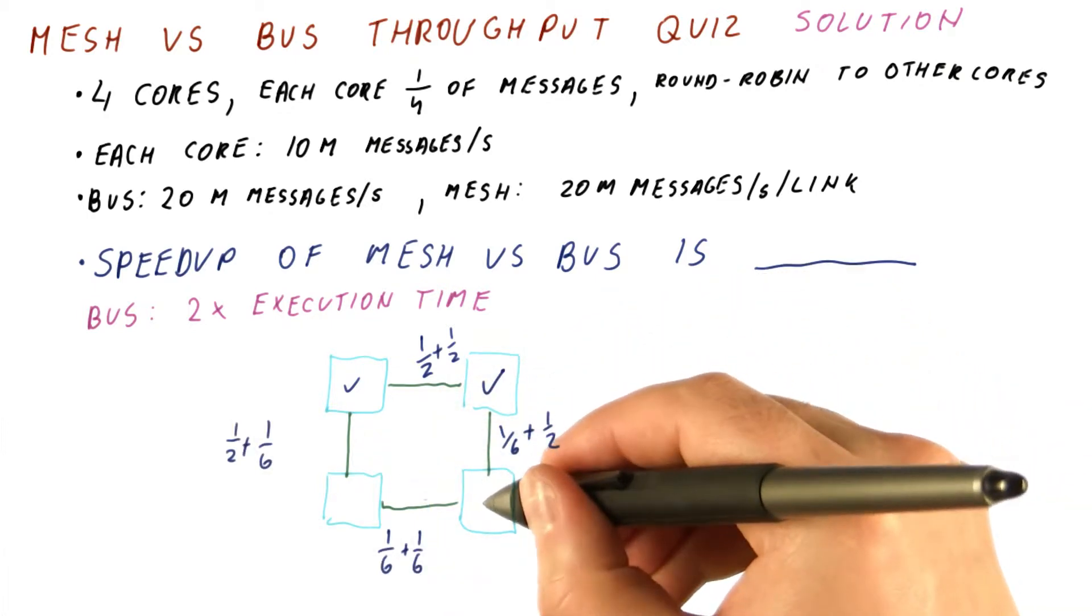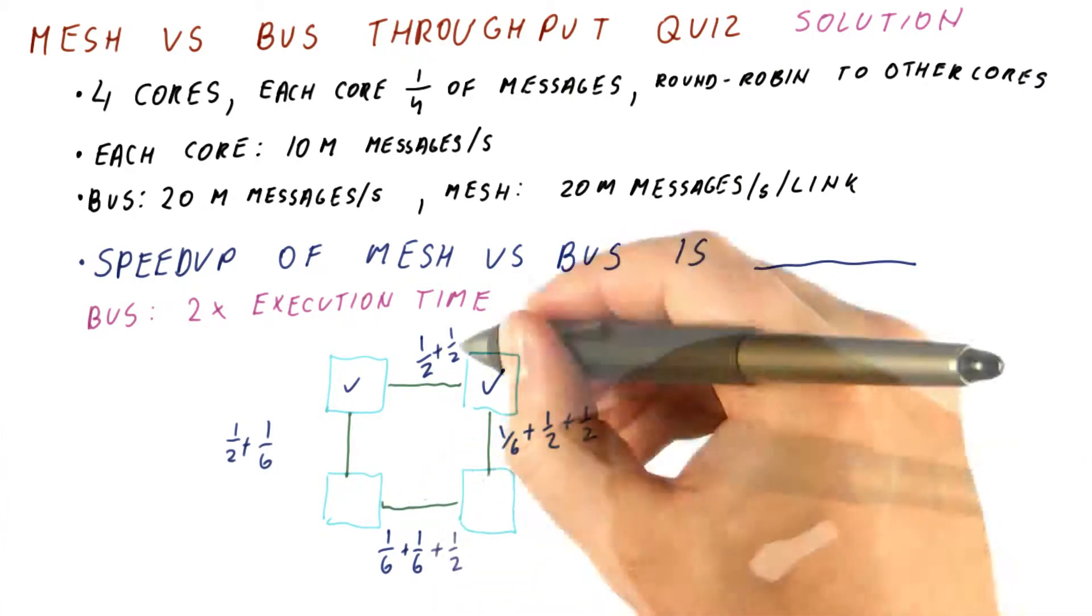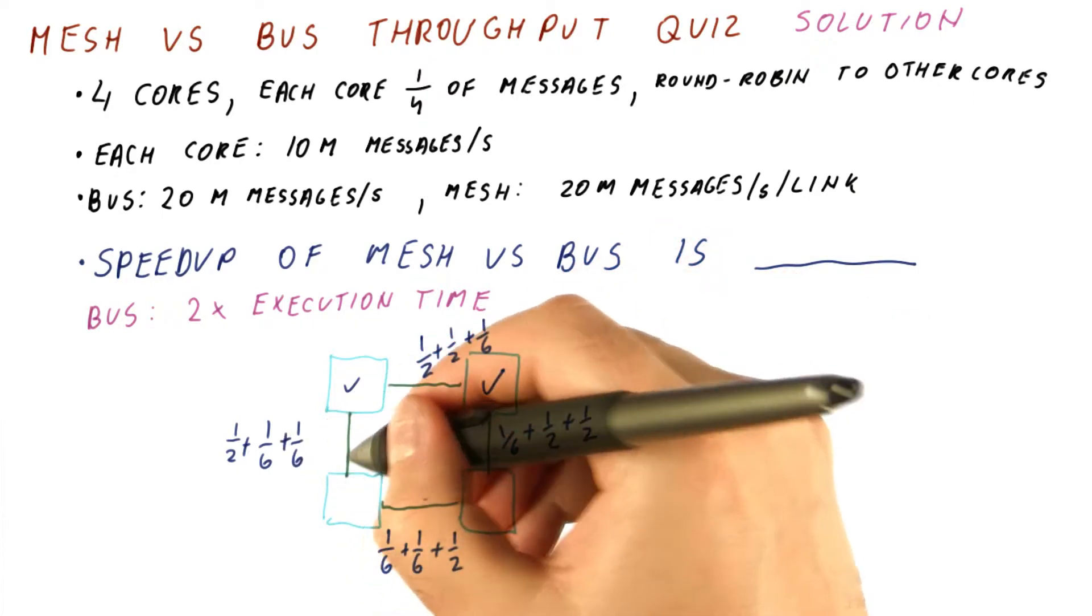Now what happens when this core is sending? One half of the messages go this way, one half go this way. One sixth of them go through this link, and one sixth go through this link.